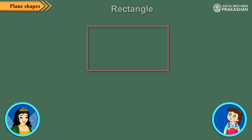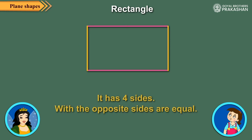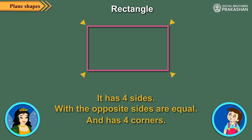Next, we take the rectangle. It has four sides with the opposite sides equal, and has four corners.